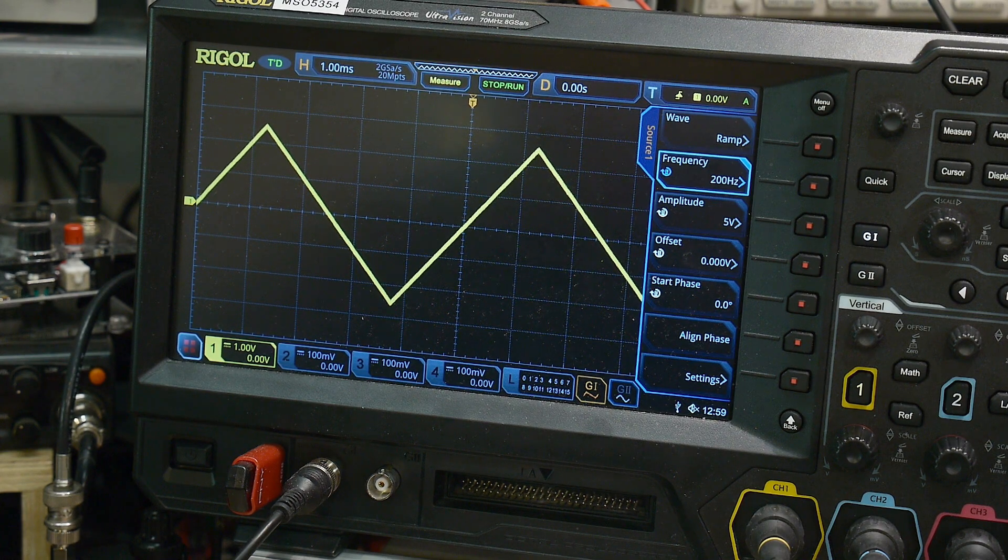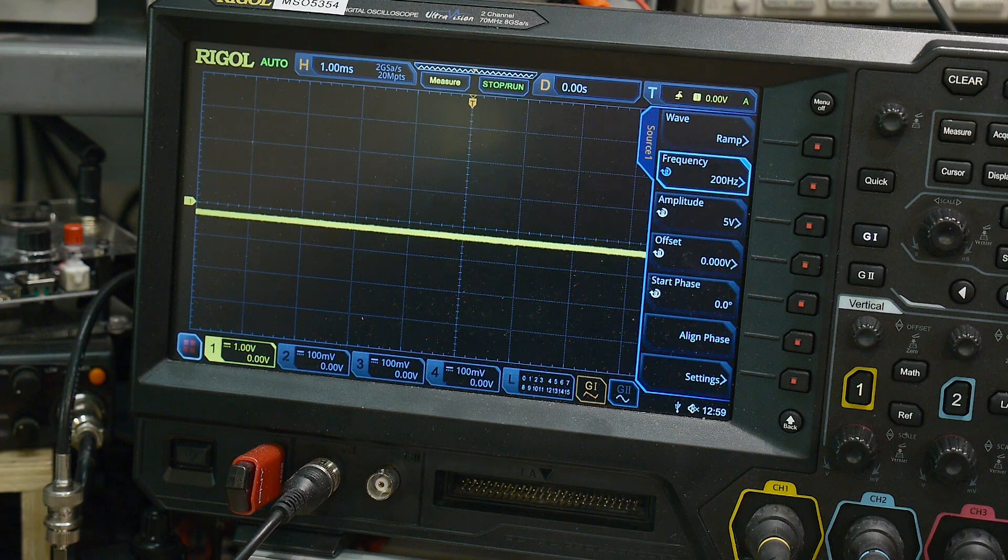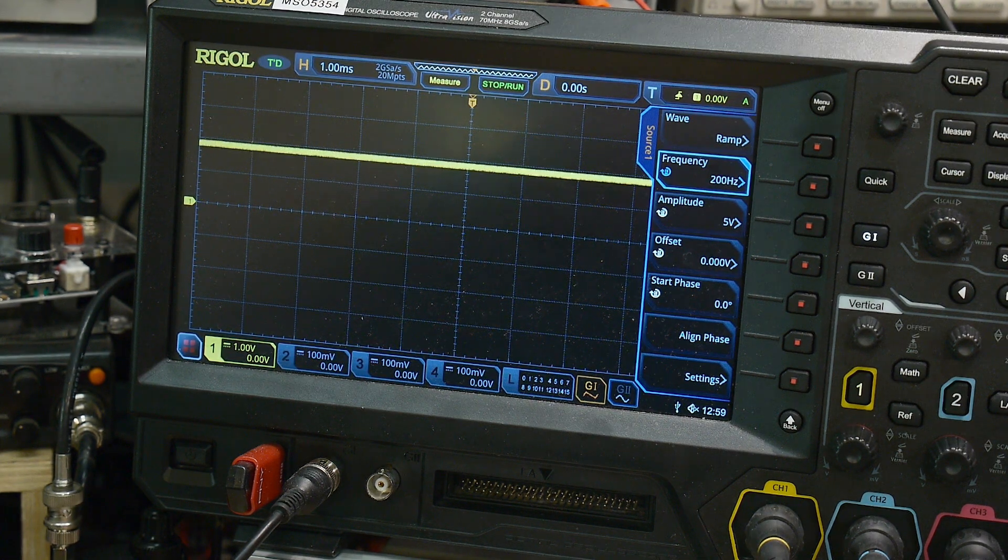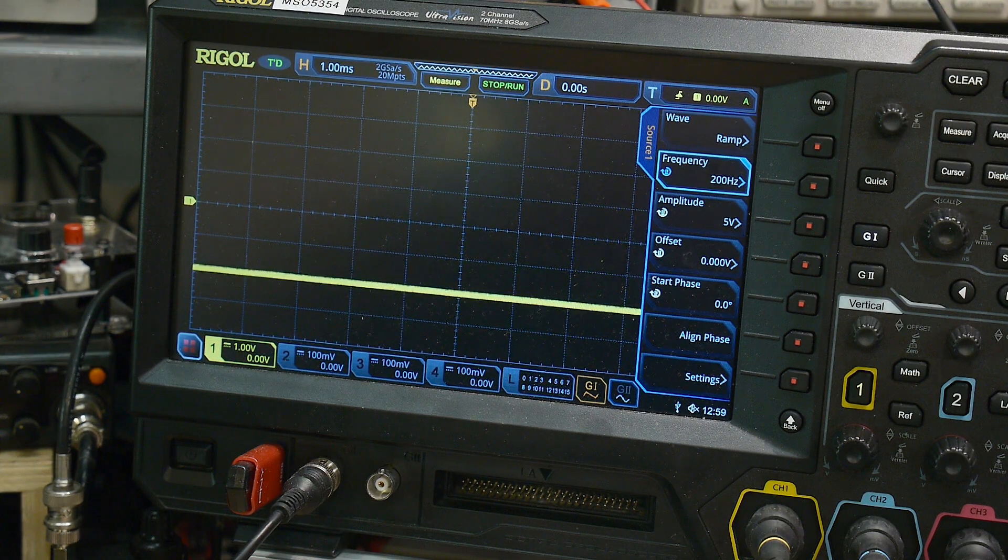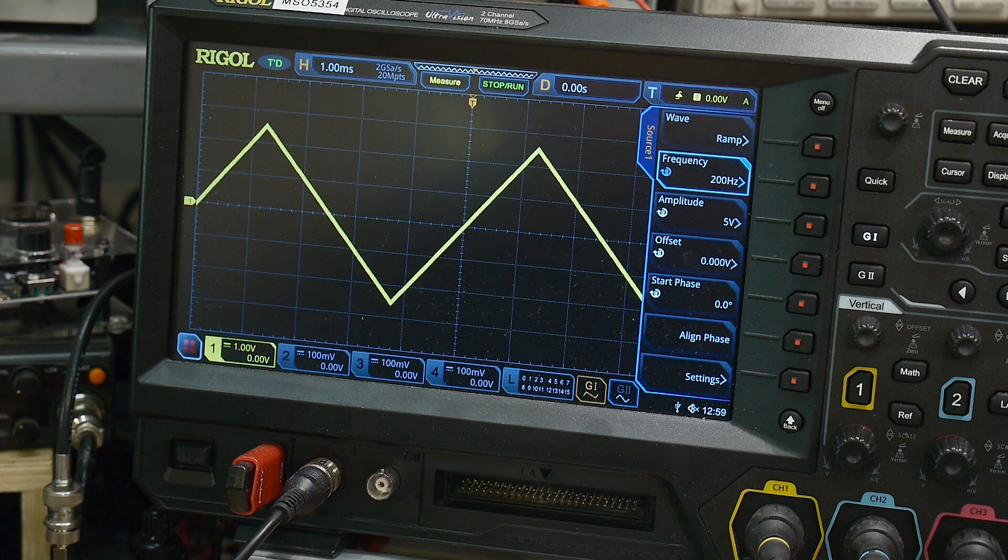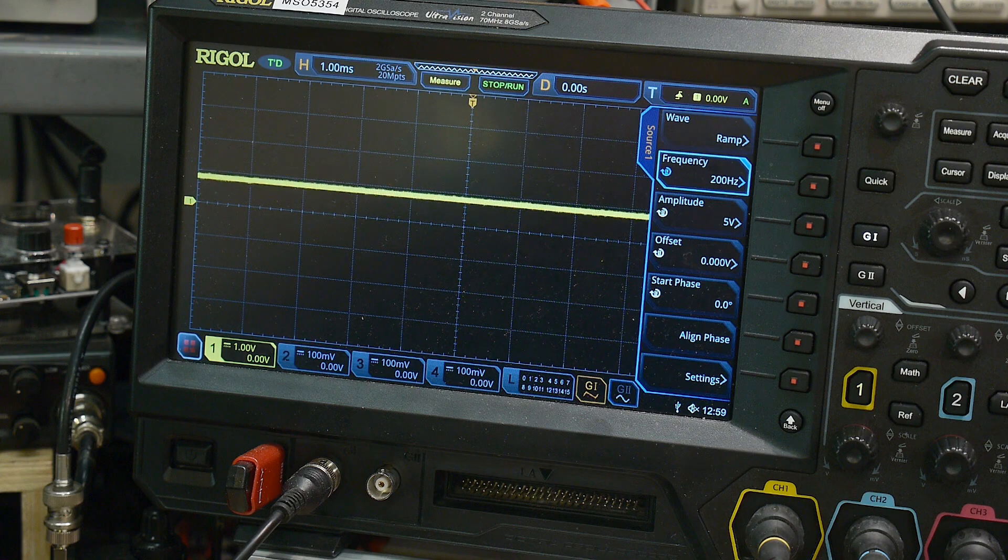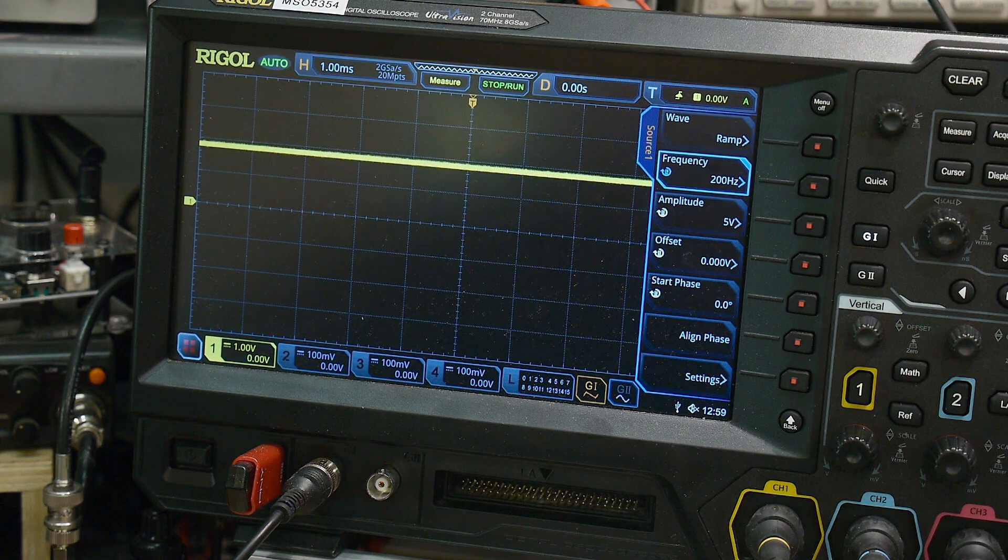Now, if I tell it to sample, it will grab wherever it was and just hold that. You can see it's just a DC voltage. I'll grab it another place. That time it was high. That time it was low. That time it was low. That time it was high. That time it was lower. See, it's just a random event where I'm catching this thing, but it samples and holds it and it just keeps it there.